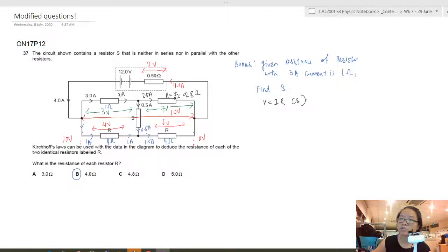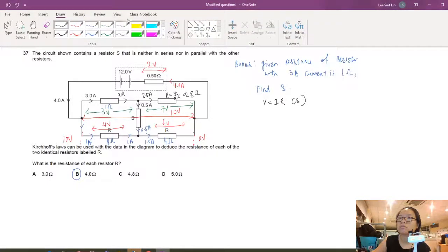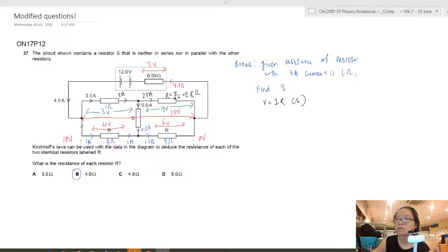And if you want to find S, you can use V equal to IR again but for resistor S. I know that the potential at this point here would be 7 volt because 10 minus 3 is 7, and this point here would be 6 because 10 minus 4 is 6. So this would be 7 minus 6. The current flowing through resistor S is 0.5, so from here you can find your R as 2 ohm.